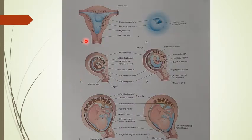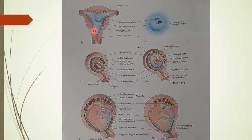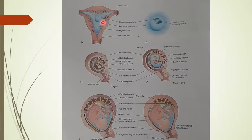In the diagram, the decidua basalis is shown at the fundus, and it is more thick than the rest of the uterine cavity. The blastocyst is embedding there. Along the rest of the uterine cavity wall from above downward, this is named decidua parietalis. The thick area is decidua basalis where the blastocyst is shown.